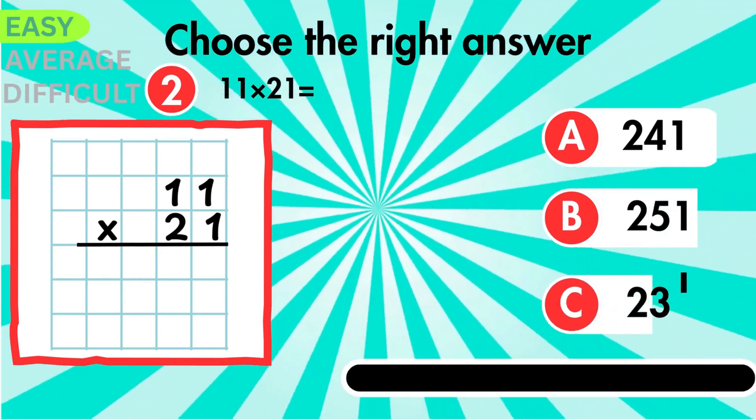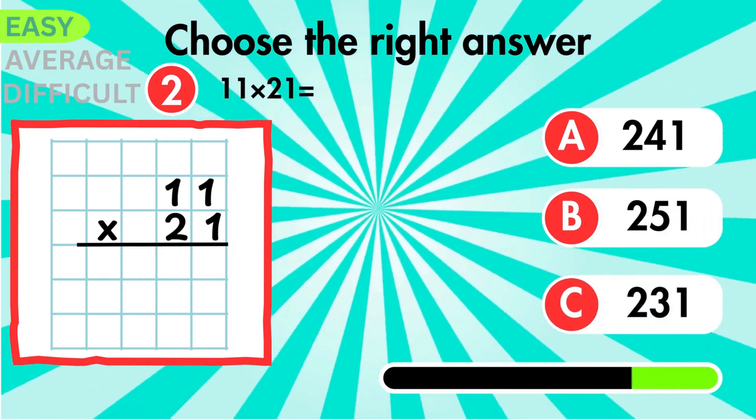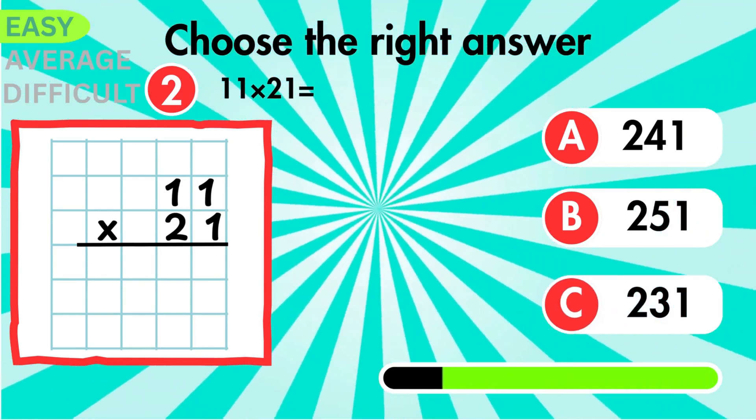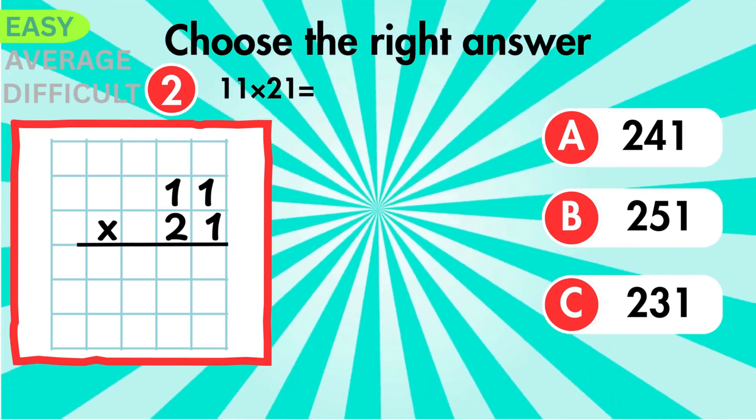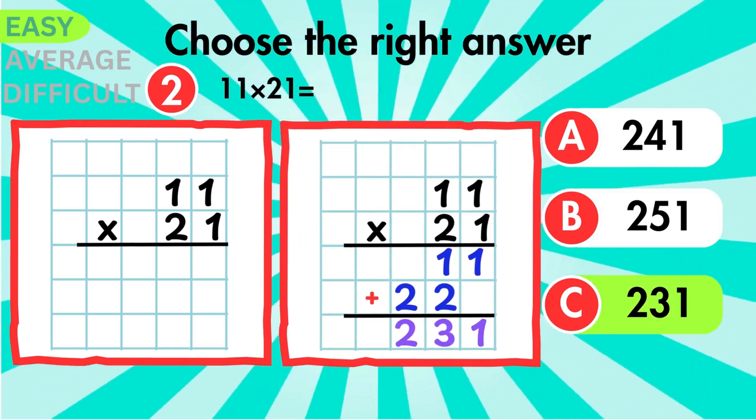What is 11 multiplied by 21? This one's very straightforward. The correct total is 231.